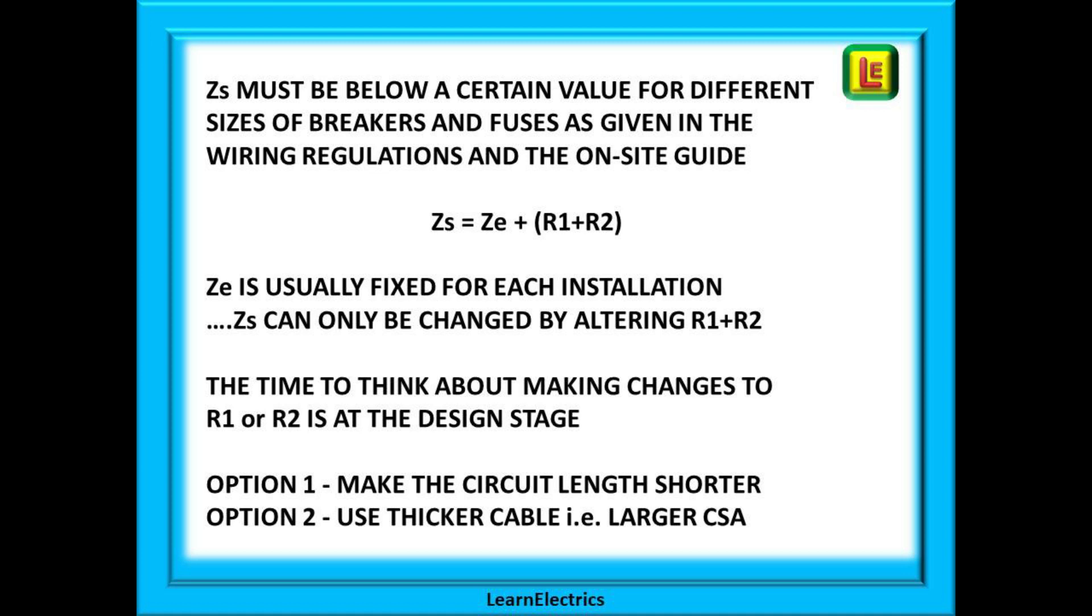We showed earlier that ZS equals ZE plus R1 plus R2. ZS is the resistance or impedance of the whole wiring system including the outside of the building and the circuit inside the building. In other words, the whole thing. ZE though is the external values and these are generally fixed for each building. It will not change. This means that ZS can only be changed by altering the value of R1 plus R2. In other words, we can only make ZS fall into line with the regulations by making changes to the internal wiring, our R1 plus R2.